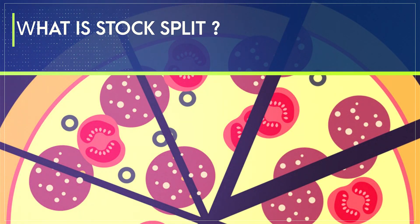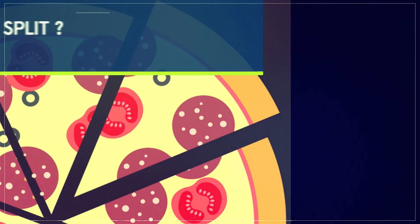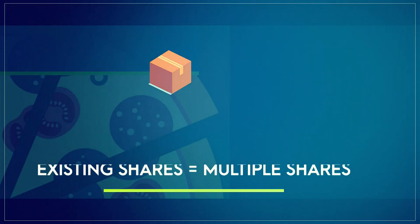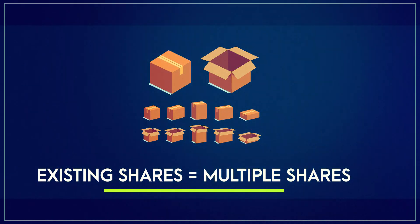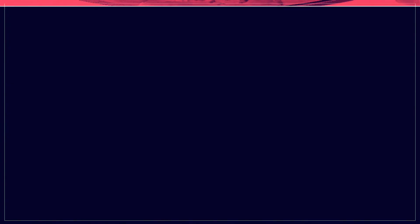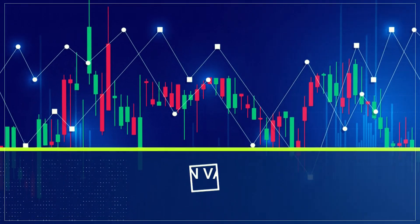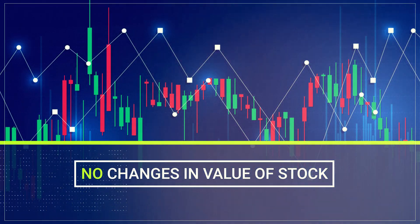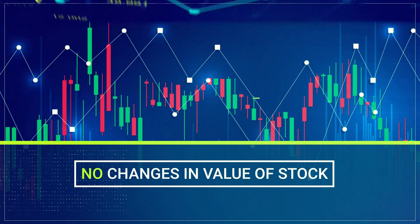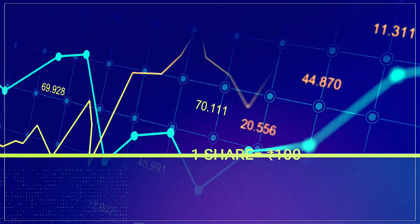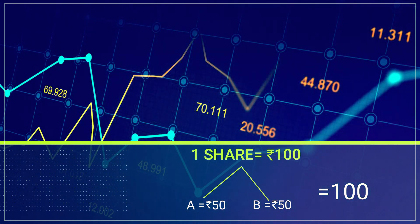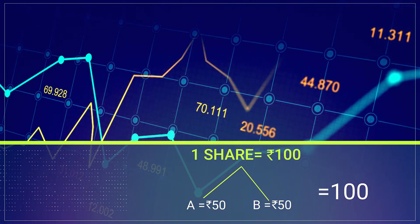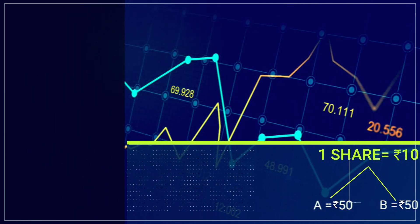Theoretically speaking, a stock split is the subdivision of the existing shares into multiple shares. The idea is to spread a larger number of shares in the market to boost the liquidity of the stock. The overall valuation or market capitalization will show no change in the value of the stock. A simple example: there is one share of a company at 100 rupees. After the stock split of two for one, there would be two shares each valued at 50. In both cases, the valuation stays at 100.